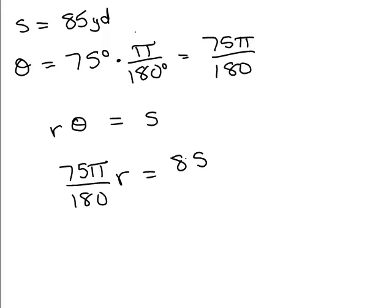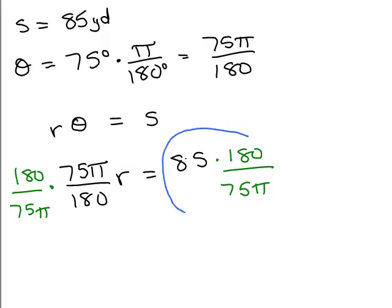So R is what I'm looking for, but theta is 75 pi over 180. That's theta times R equals S, which is 85. And then multiply both sides by the reciprocal, 180 over 75 pi. And now you could plug all this in your calculator. But you've got to be careful with order of operations and everything.